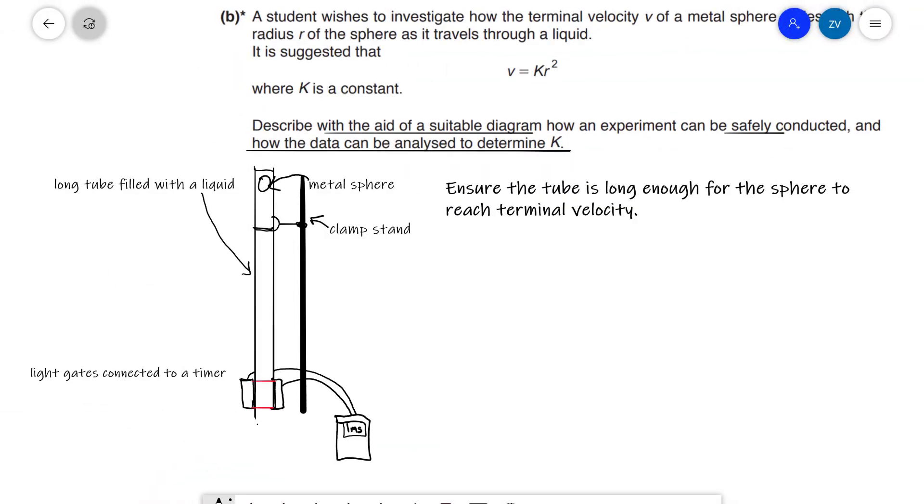So the first part, with the aid of a suitable diagram, how an experiment can be safely conducted. Well, here is our diagram. We have a long tube filled with a liquid. Now, why is it a long tube? We need to ensure that the tube is long enough for the sphere to reach terminal velocity. If the tube was only this long, then it's possible that the sphere might not have had enough time to reach terminal velocity by the time we measure the actual velocity.